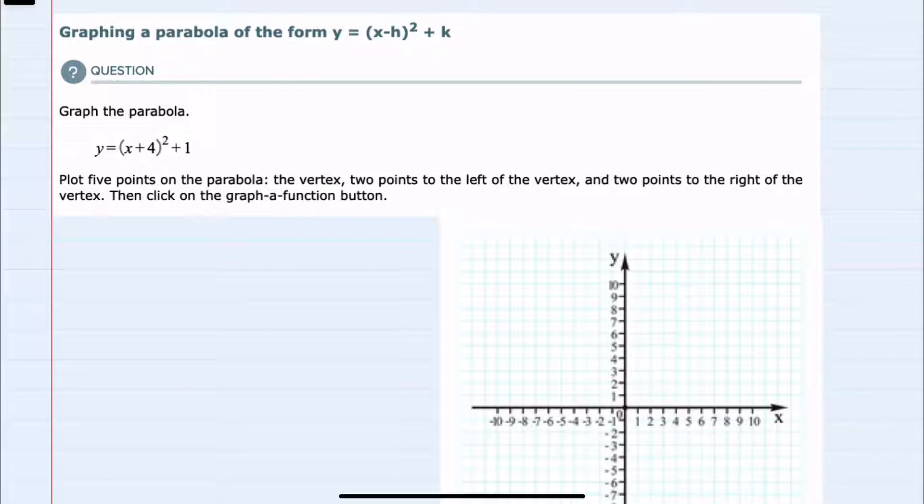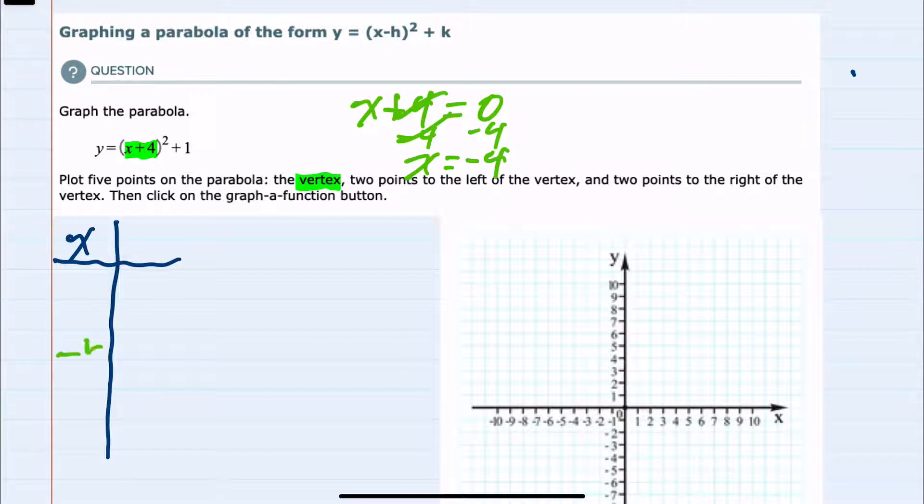two points to the left and two points to the right. So I'll create a table where we'll plug in those 5 points, but first we have to find the vertex. The vertex will occur where what is being squared equals 0. So the question is, where does x + 4 equal 0? And that happens where x equals -4.